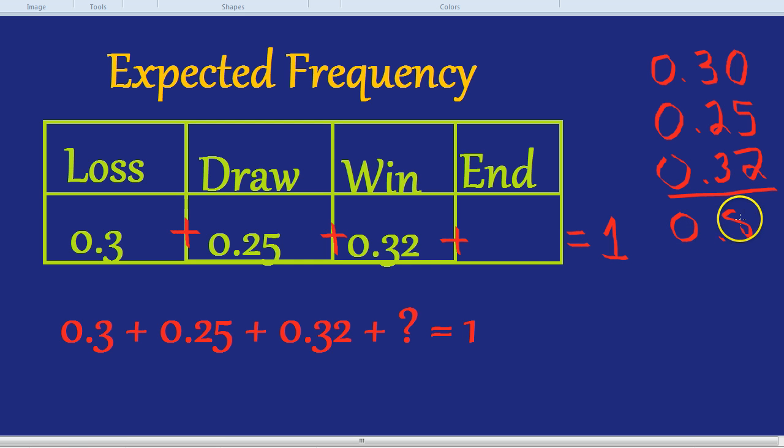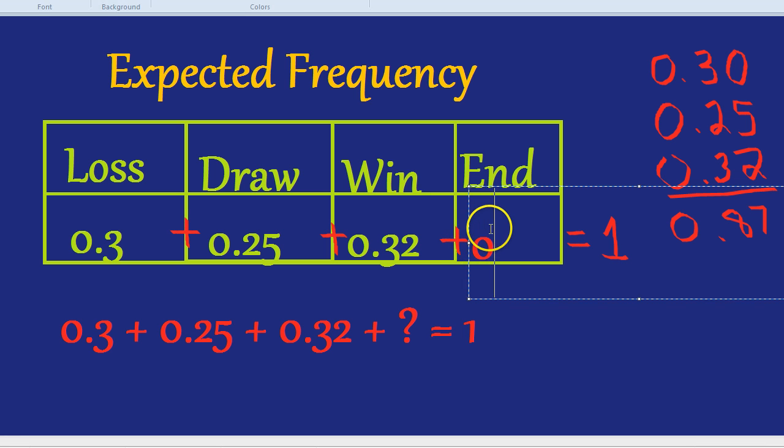And what's left over from 1? Well, if we have 87% so far, and they all have to add up to 1, we have 13% left over, which is 0.13.